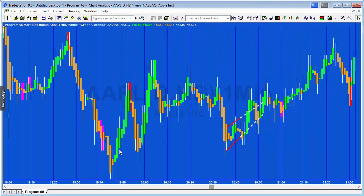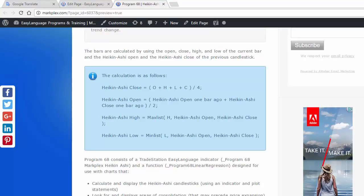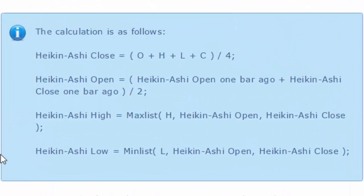I've added a couple of extra features. The first is an indication of consolidation periods. But before we get to that, let's look at the website page for this program. To calculate Heikin Ashi: the close equals the average of the open, high, low, and close; the open is the average of the Heikin Ashi open and close one bar ago; the high is the maximum of the high, Heikin Ashi open, and Heikin Ashi close; and the low is the minimum of the low, Heikin Ashi open, and Heikin Ashi close.